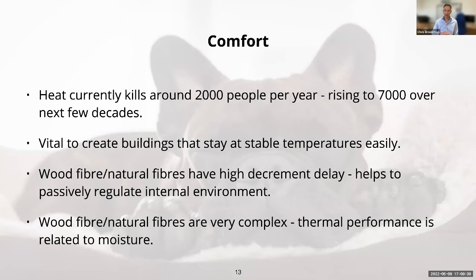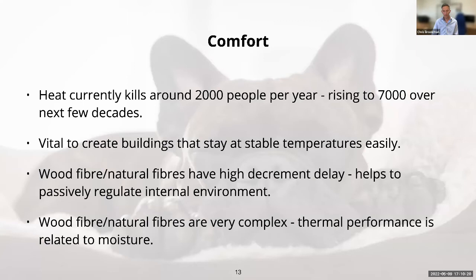Wood fibre particularly — and plenty of other natural fibres — have a really high decrement delay. That is the time taken from heat hitting the outside of a building, roof, or wall to that heat actually entering the inside. The longer you can delay that, the more stable the building becomes inside. Plant fibres tend to be incredibly complex on a microscopic level — their surface chemistry is really interesting and, because in a plant they're generally moving moisture around, they tend to work extremely well with moisture.